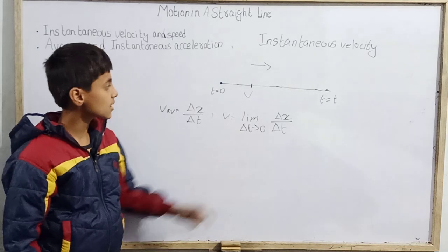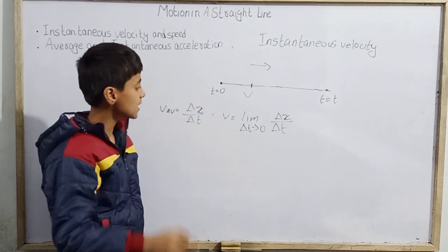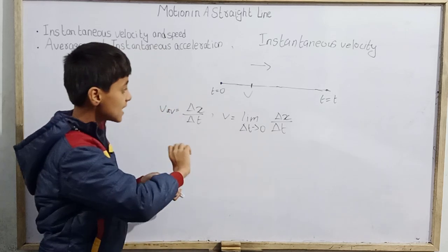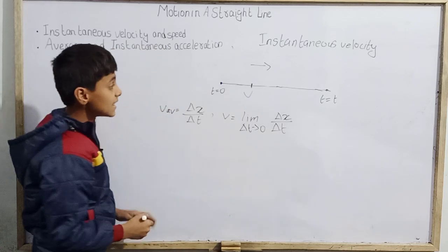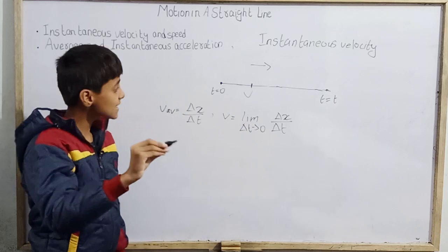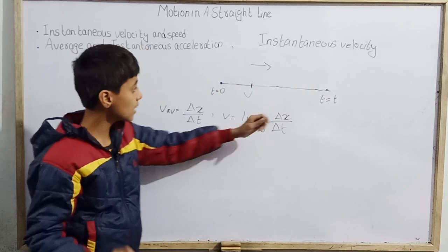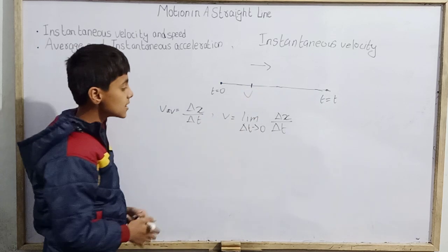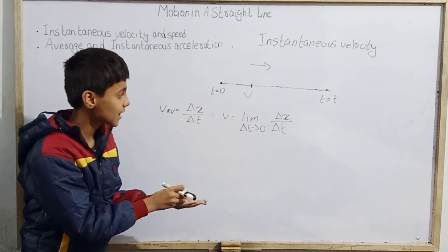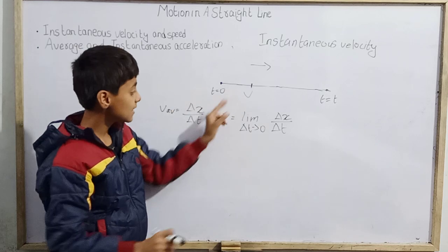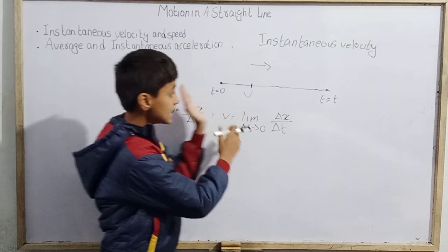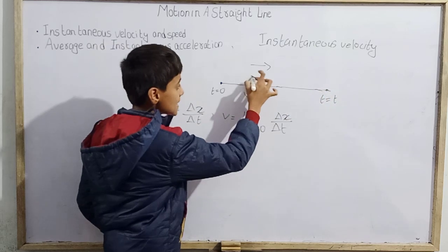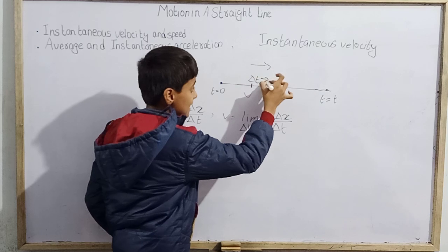Why did I do this? Because delta t is for the entire journey — a long time duration. If my friend asks the velocity at a particular instant, I want to tell the velocity at that exact time, not the average for the whole journey. So I concentrate on making delta t not the whole journey but just that instant — delta t becomes nearly 0.